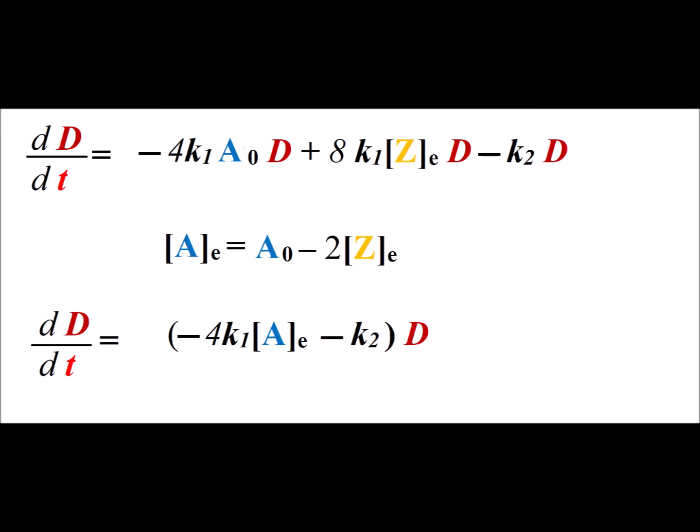Here we make use of the fact that the equilibrium concentration of the quantity A is equal to A sub 0 minus 2 times the equilibrium concentration of Z.